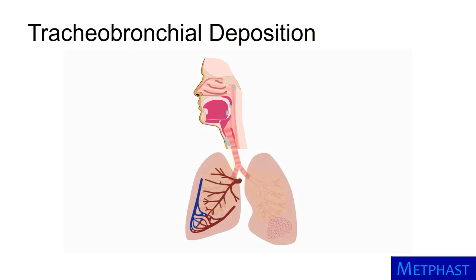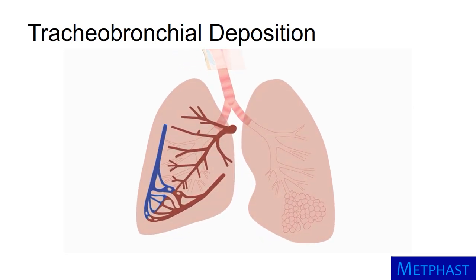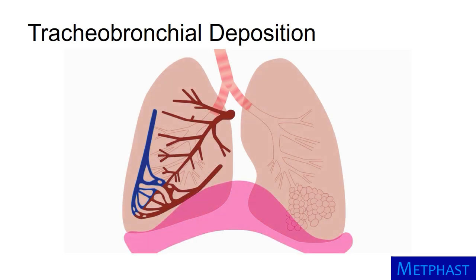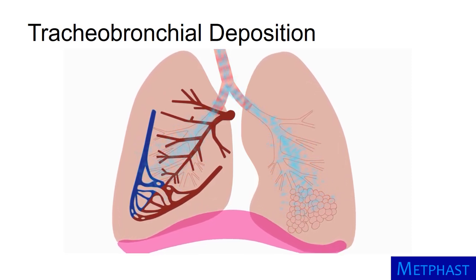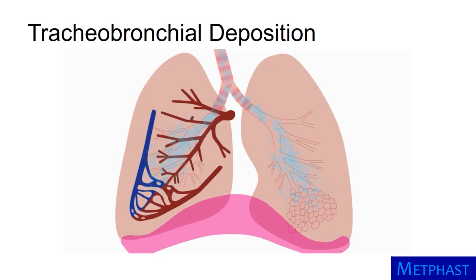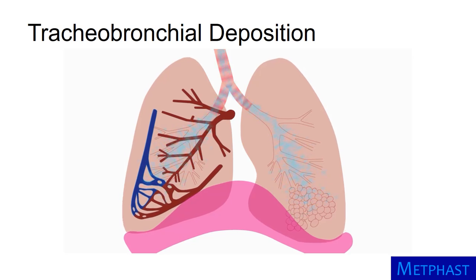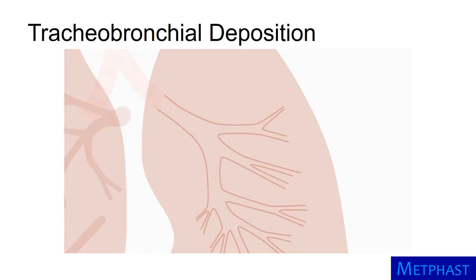Past the larynx is the tracheobronchial region of the respiratory tract — the upper part of the lungs. The diaphragm and other muscles cause the lungs to expand and contract. When the diaphragm tightens and moves downward, space in the chest is created, allowing the lungs to expand and air to be inhaled. Then, when the diaphragm relaxes and moves upward, the space in the chest is reduced, forcing the lungs to become smaller and air to be exhaled. The rate of inhalation changes in response to the body's need for oxygen.